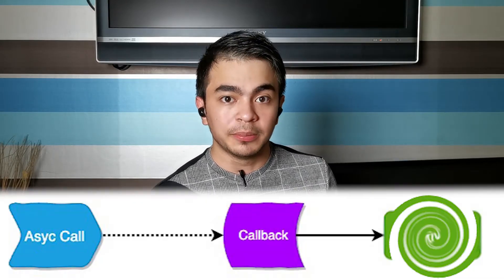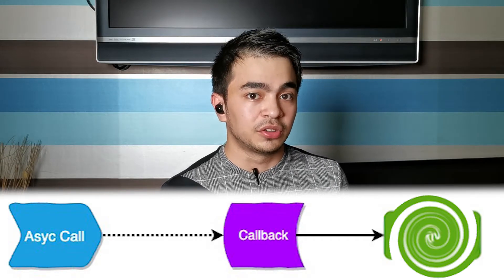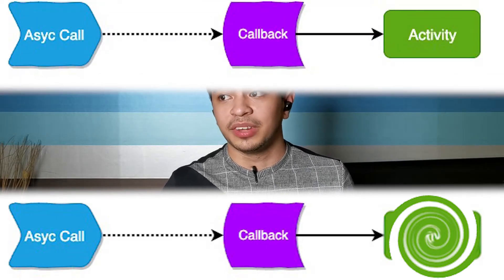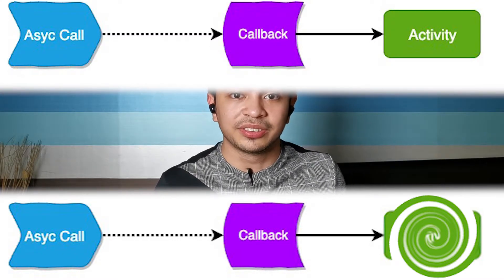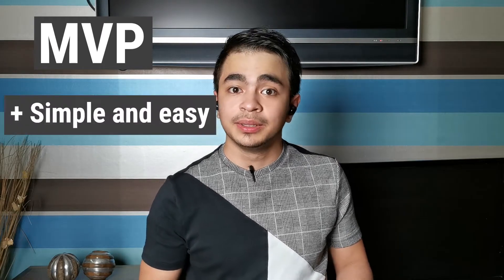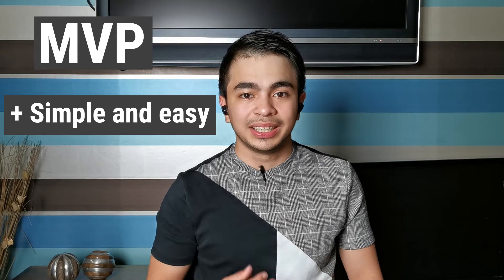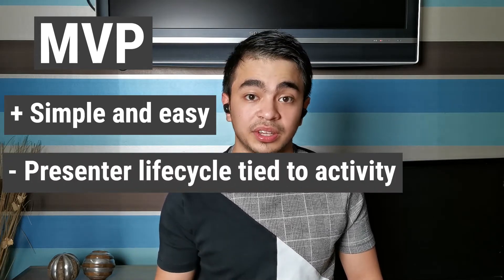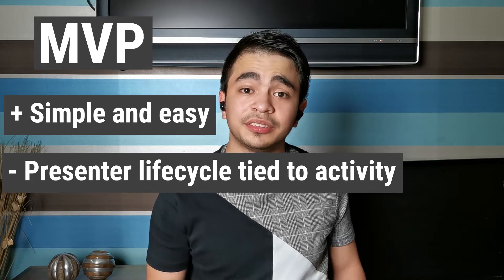But this stands out in MVP especially, because the presenter's lifecycle is tied to the activity's. This means that it can't survive configuration changes that instantly destroy and recreate the activity, like screen rotation. When this happens, your activity gets destroyed, your presenter gets lost, but somewhere in memory your callback is still listening with a reference to the destroyed view, and you have a new view and a new presenter starting async calls all over again. It's just chaos! So to round up MVP: its main advantage comes in its simplicity — it's easy to use and just as easy to learn. Its disadvantage comes in that the presenter's lifecycle is tied to the activity and it can't survive configuration changes.